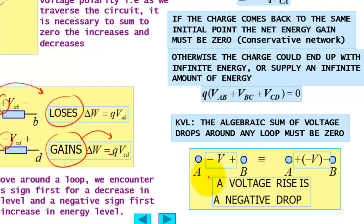A positive voltage rise is a negative voltage drop. For example, if a positive charge moves in this direction, this is voltage rise and it is equal to negative voltage drop.